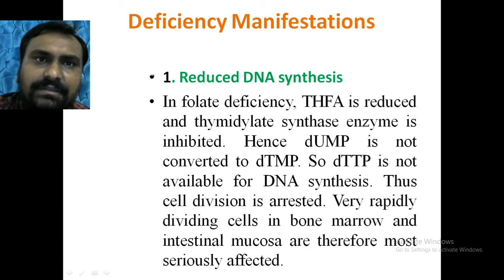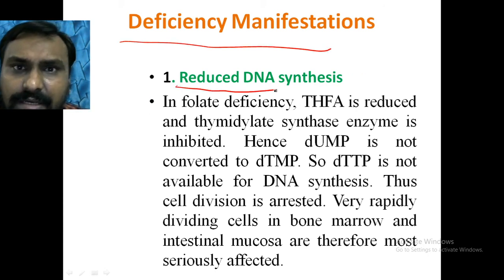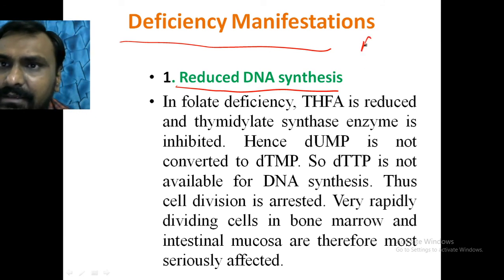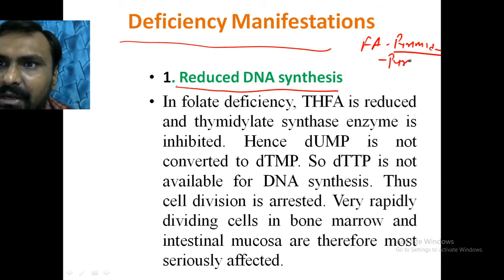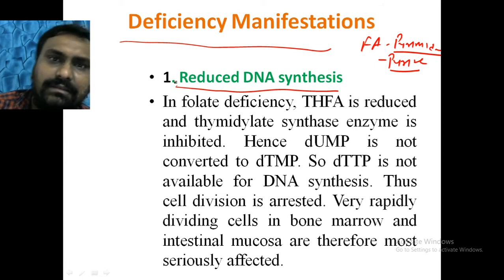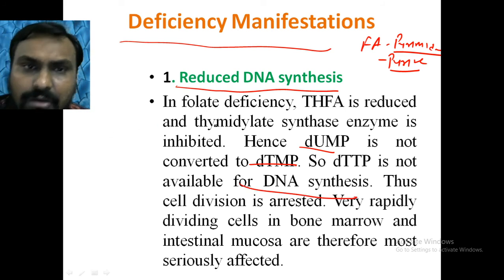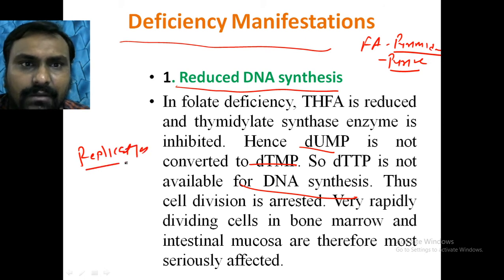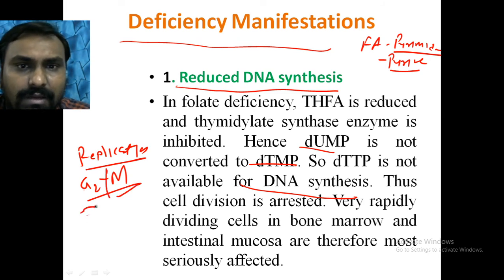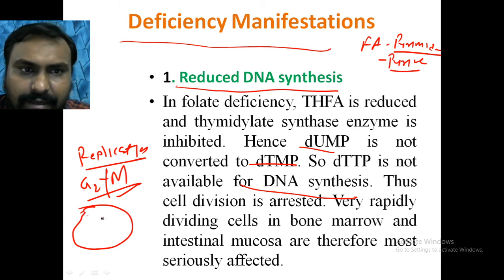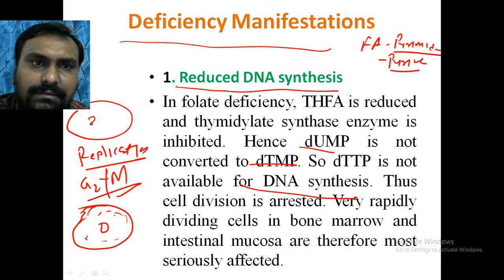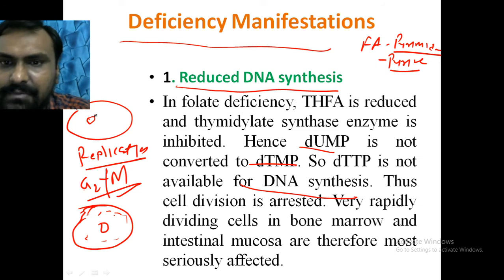In folic acid deficiency there will be reduced DNA synthesis, since folic acid is required for pyrimidine synthesis (dUMP to dTMP) and purine ring C2 and C8. If folic acid is deficient, dUMP is not converted to TMP and purines are not available, so replication stops. The cell cannot progress from G2 phase to M phase. The nucleus fails to mature but the cell continues to grow, producing megaloblasts — the RBC becomes macrocytes.